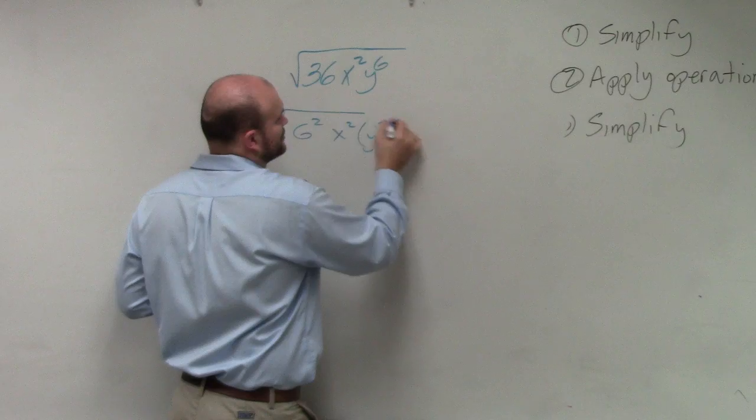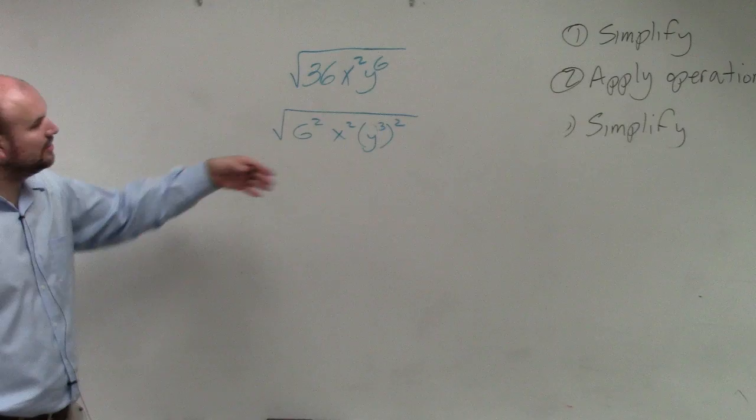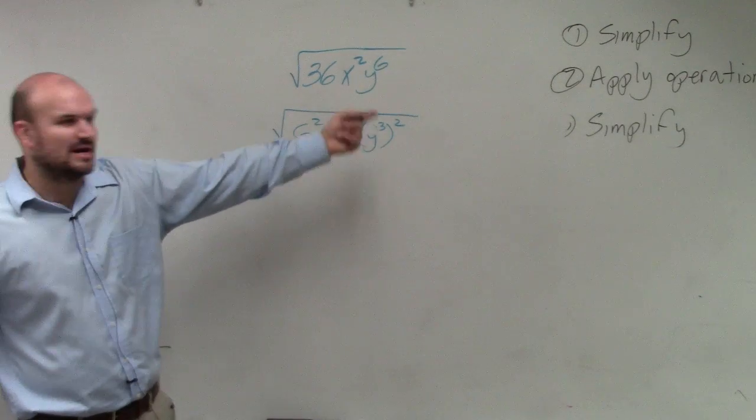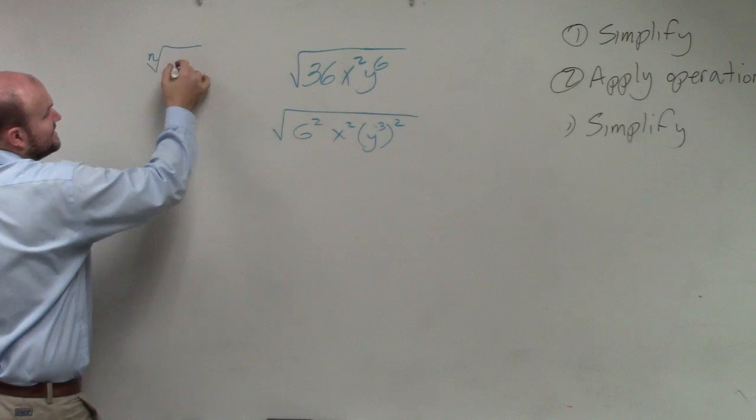y cubed squared by using the power rule, right? Whenever you can use the power rule, I prefer to use the power rule. But you also could have done y squared times y squared times y squared. And then again, guys, the main important thing is just using this identity element.